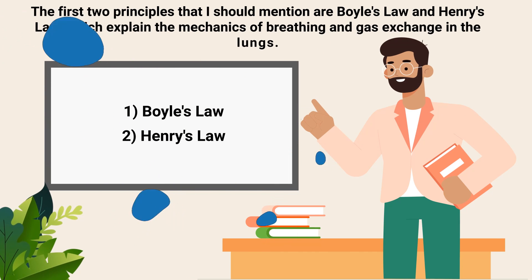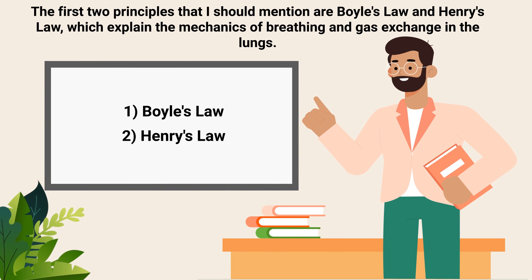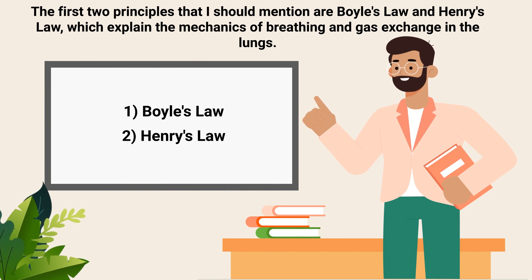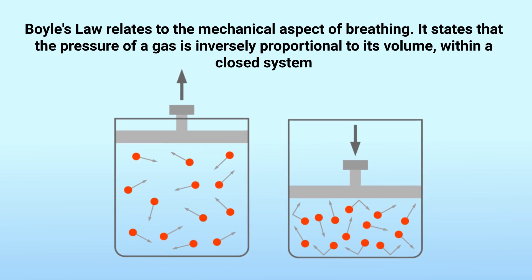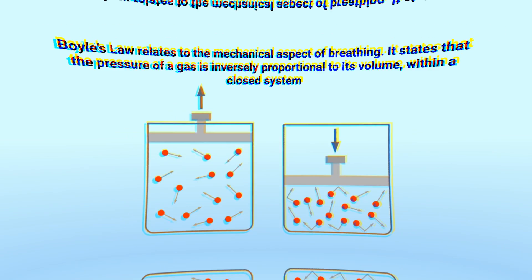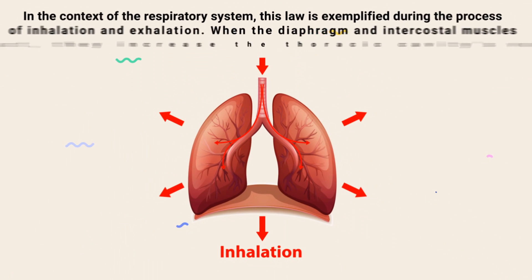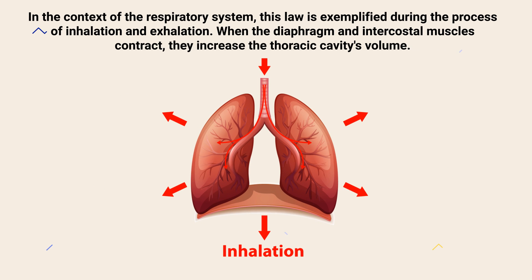The first two principles to mention are Boyle's Law and Henry's Law, which explain the mechanics of breathing and gas exchange in the lungs. Boyle's Law relates to the mechanical aspect of breathing. It states that the pressure of a gas is inversely proportional to its volume within a closed system. In the context of the respiratory system, this law is exemplified during the process of inhalation and exhalation.